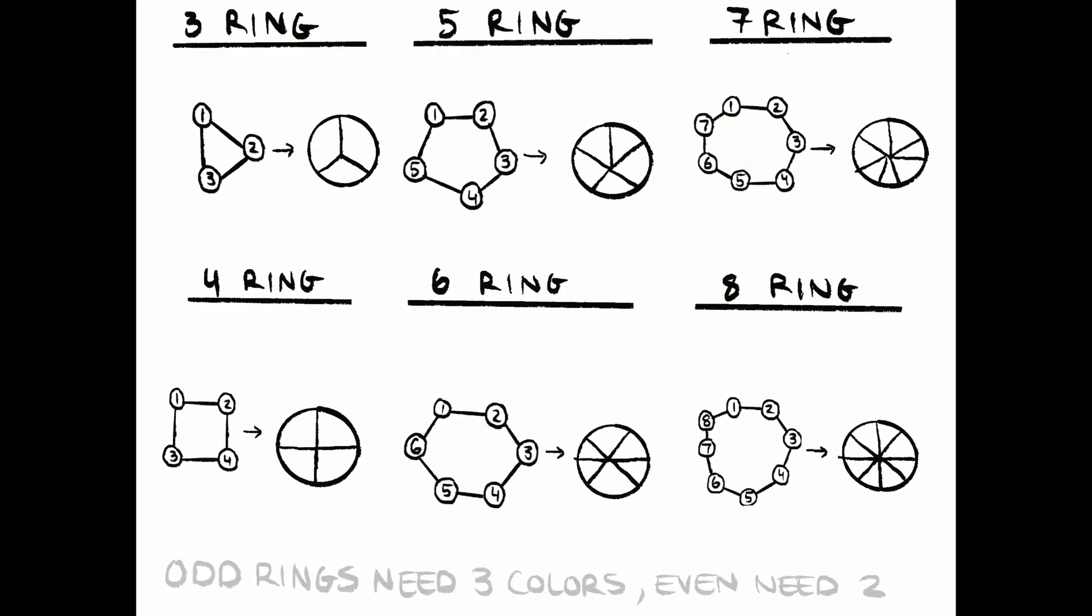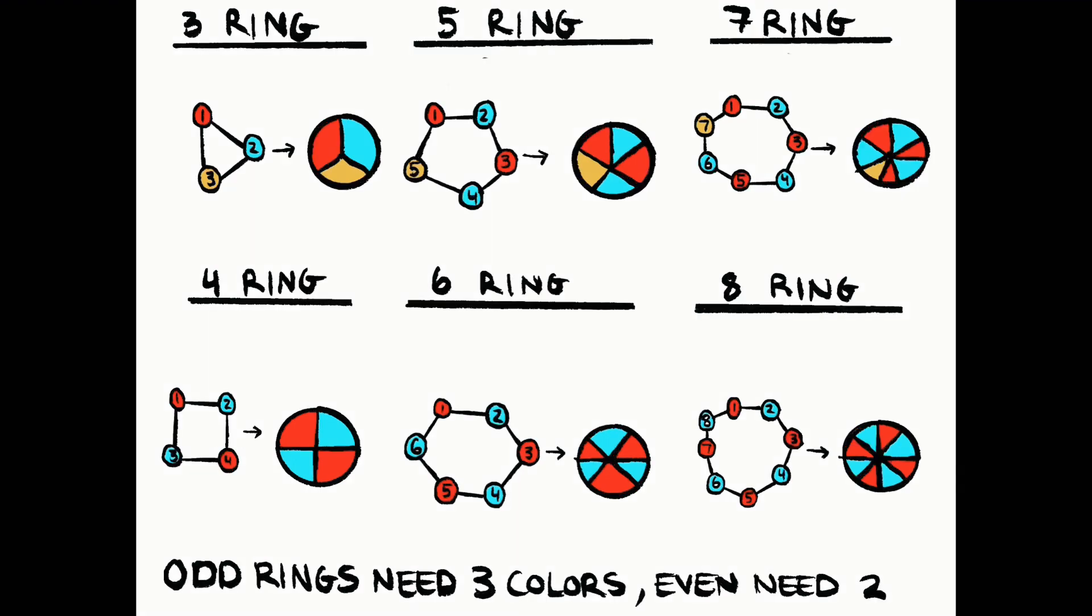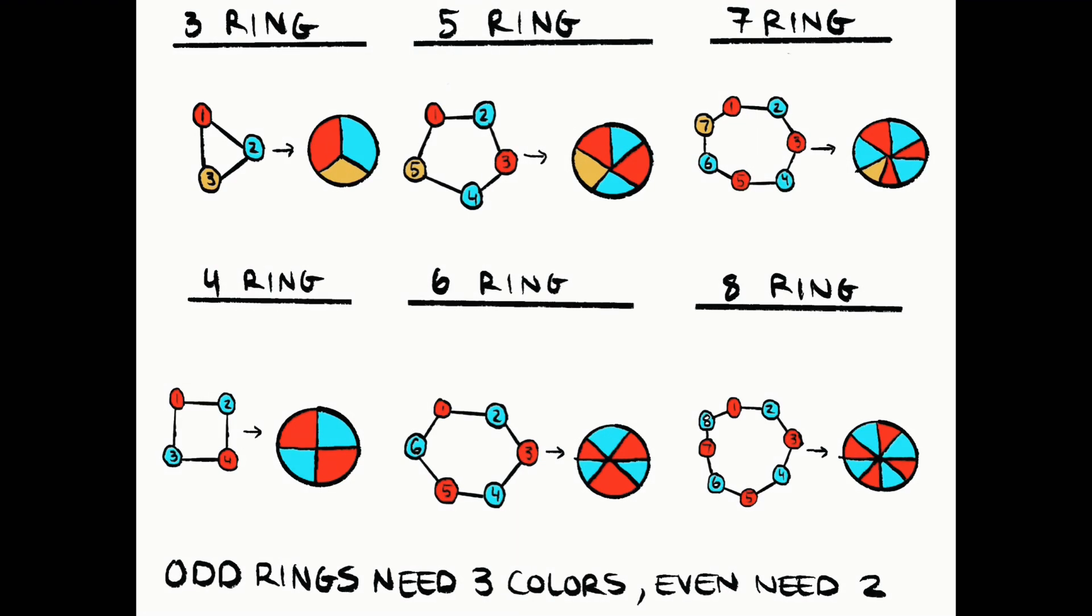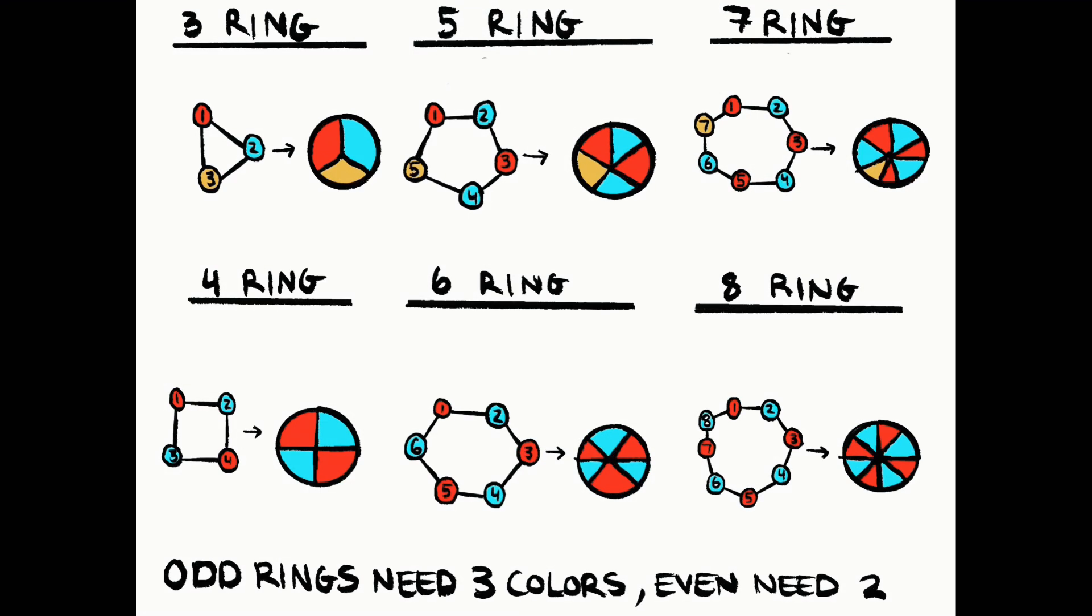To color loops of any size, repeating alternating colors can be used. For loops with an odd number of vertices, three colors are needed. For loops with an even number, only two colors are needed.